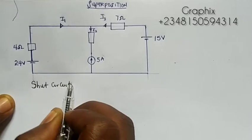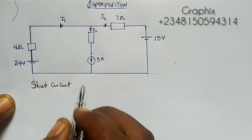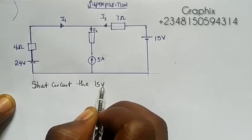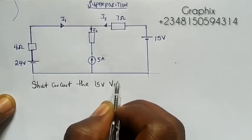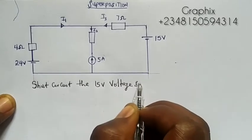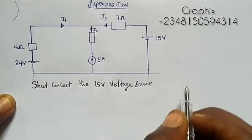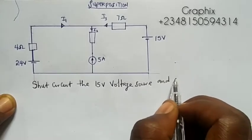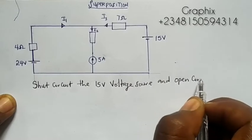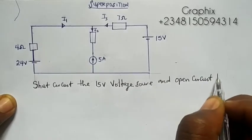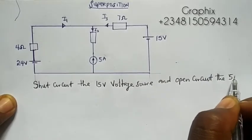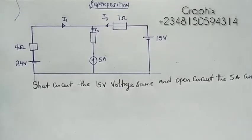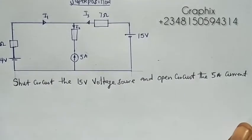We short circuit the 15-volt voltage source and open circuit the 5-ampere current source.